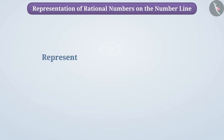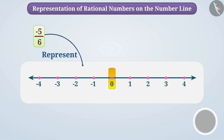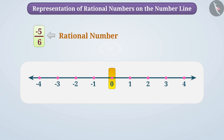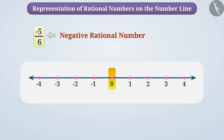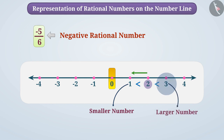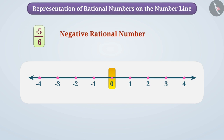Suppose we have to represent the rational number minus 5 by 6 on the number line. Pause the video first and try to represent it on the number line. The rational number minus 5 by 6 is a negative rational number. We know that on a number line, a number smaller than another number is represented on its left side and a larger number on its right. Since the values of all negative rational numbers are less than 0, their positions are to the left of 0.